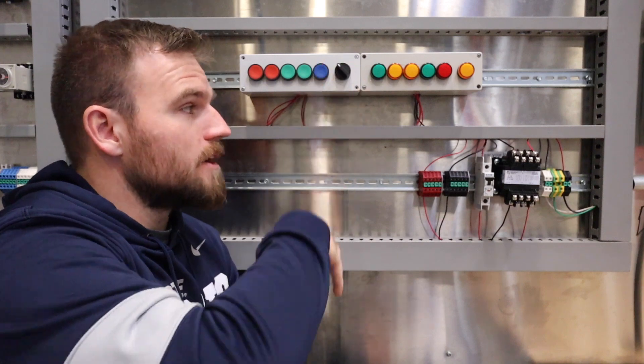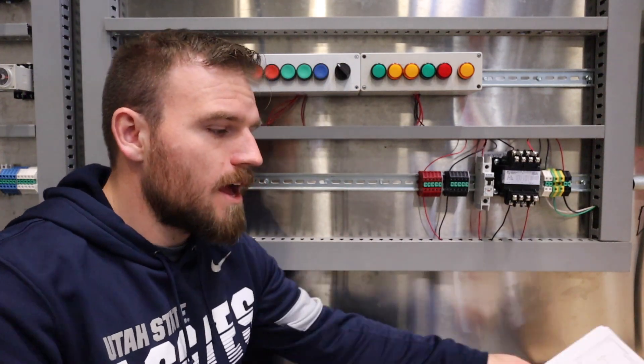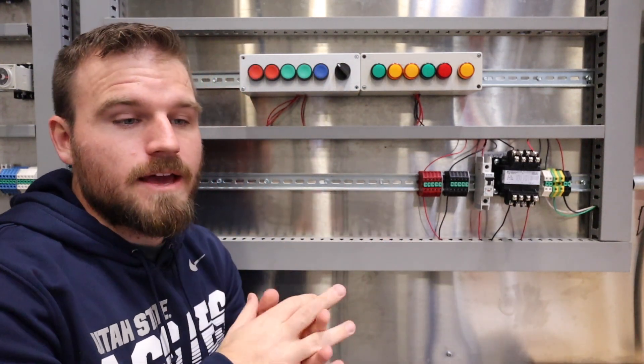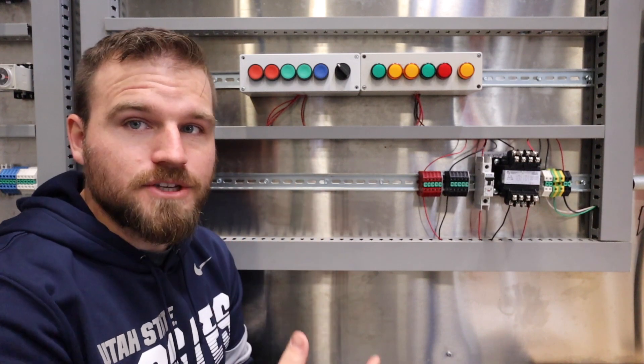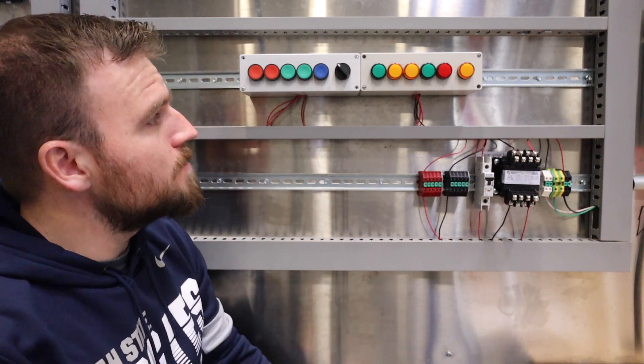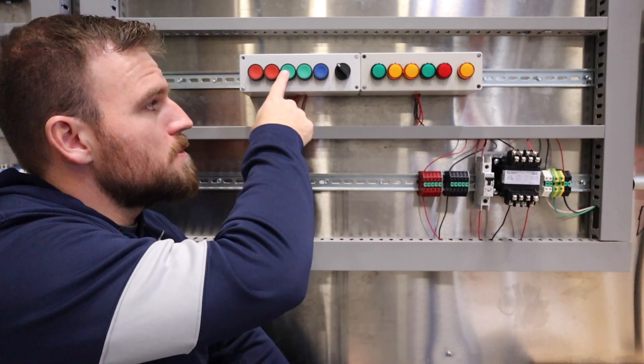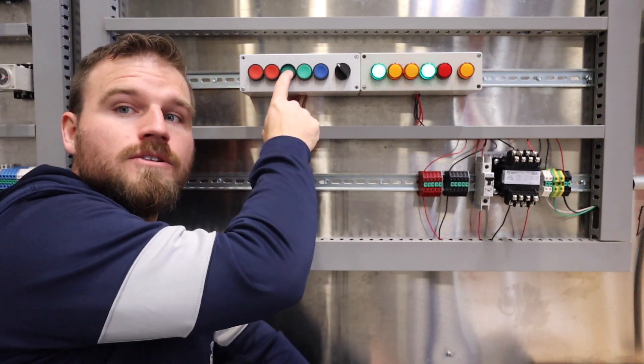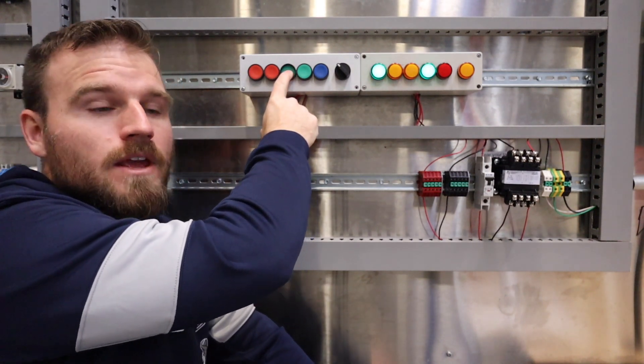So we have a working circuit. Now, in all my videos or all my labs, I'd like to have a correct operation. So the correct operation of this lab will be when I push the normally open green button right here, two lights come on.